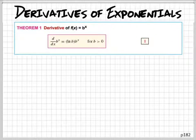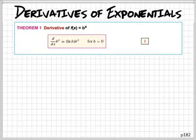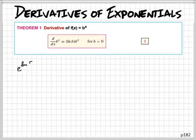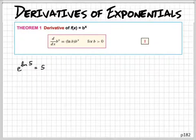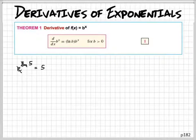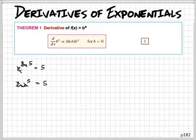We're going to derive this really fast, or prove it, to show you guys that when we take the derivative of this, we get that. But first, I have to remind you guys — do you know what this is? If I put e to the natural log of 5, do you guys know what that equals? That equals 5. Because base e and natural log are inverses of each other, and so when you do that with them, they cancel out.